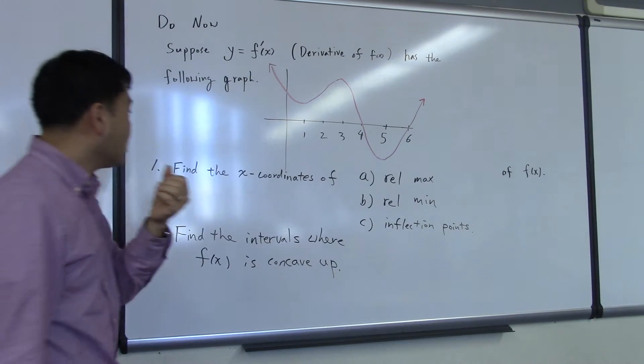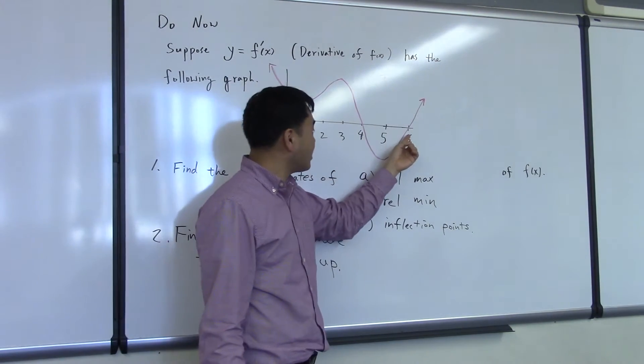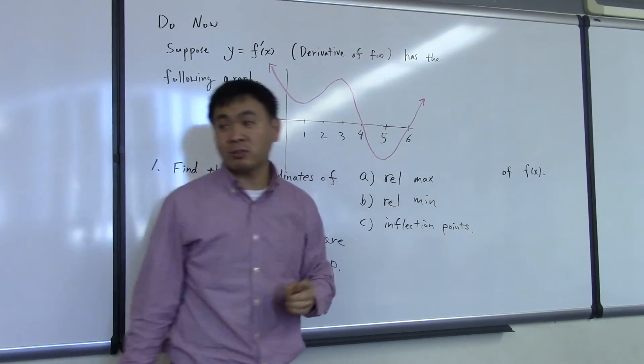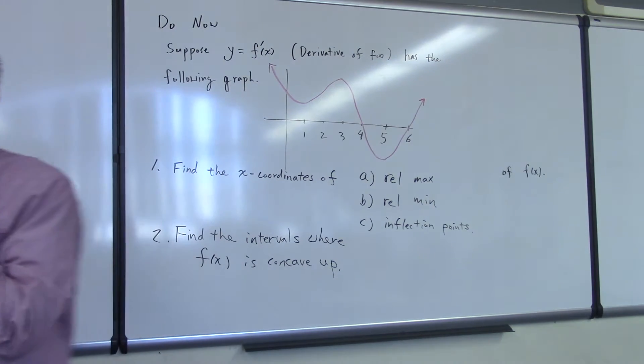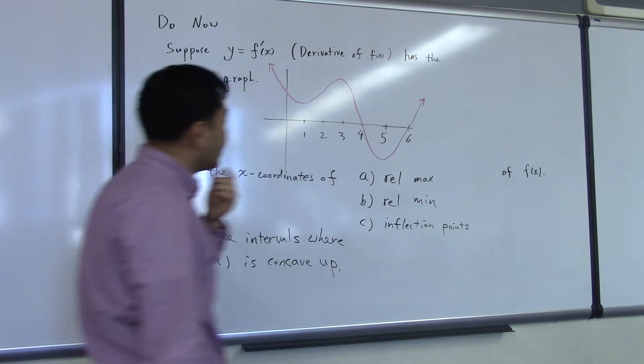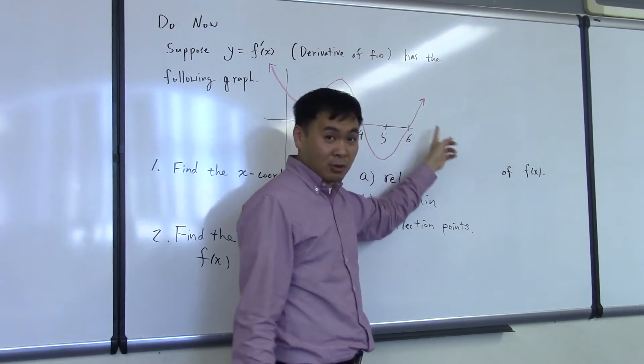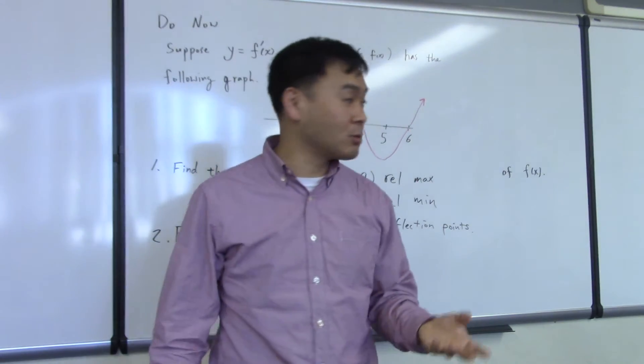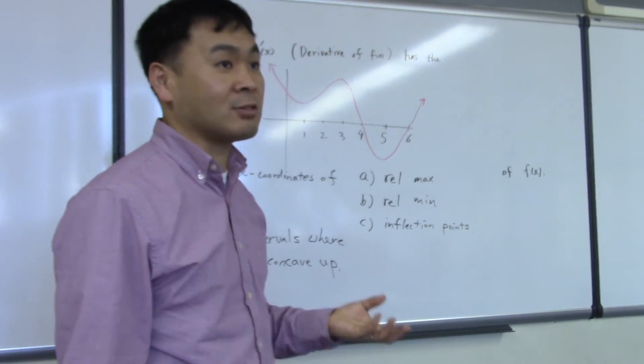It's increasing, right? And between 4 and 6, f prime is negative. What does that tell us about f of x? It's decreasing, right? And after 6 is positive, so the function f of x is increasing.